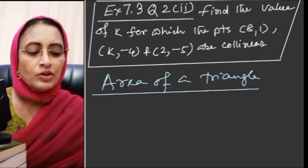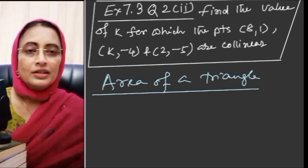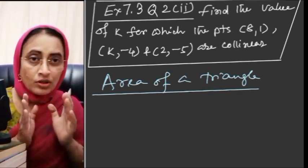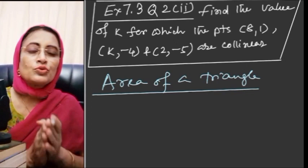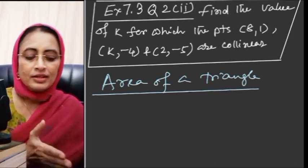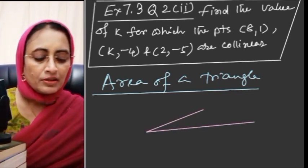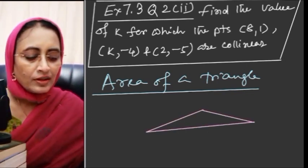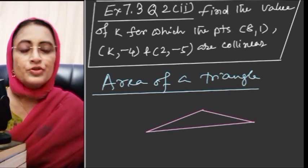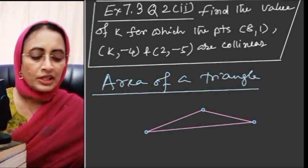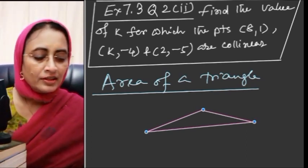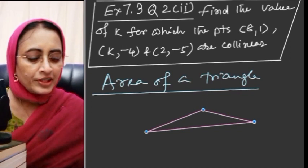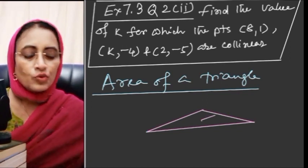If three points are collinear, it is not possible to draw a triangle with those three points. We can try to draw a triangle with those three collinear points, but it is not possible.